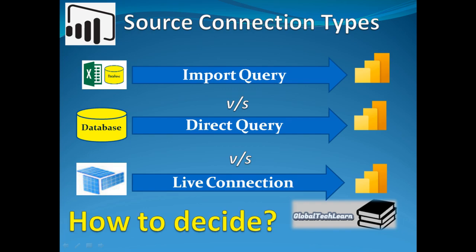Hello friends, welcome to our channel Global Tech Learn. In this video we will see what are the different connection modes available in Power BI and how to decide which one to use. In Power BI, we can get data by either using import mode, which pulls data from the source and stores it in Power BI Desktop, or by using direct query mode, which connects to the data source and executes queries on the data source itself. The third is live connection, which only reads data from the source and presents it on the report. Now let's see practically how to connect to data sources using these three different modes and what are the advantages and features of each connection type.